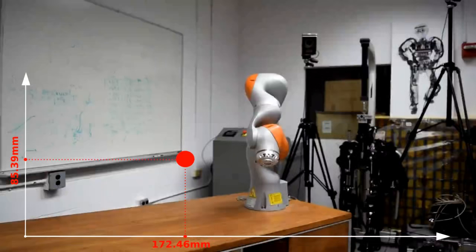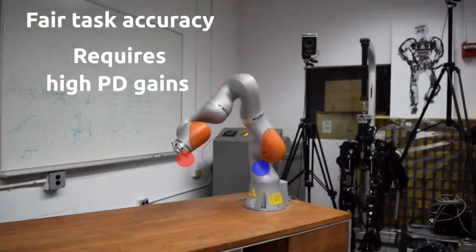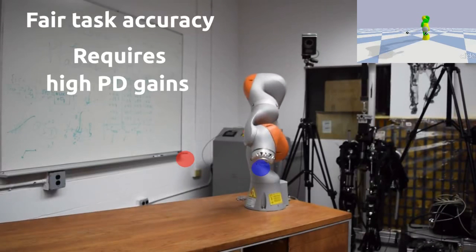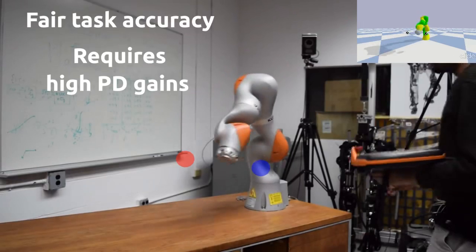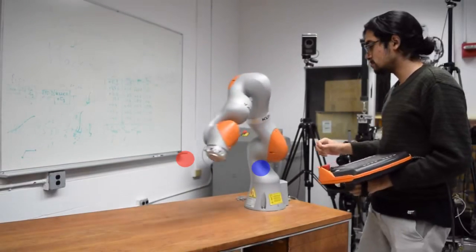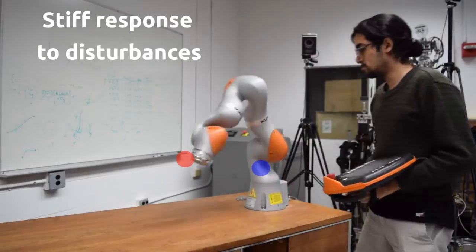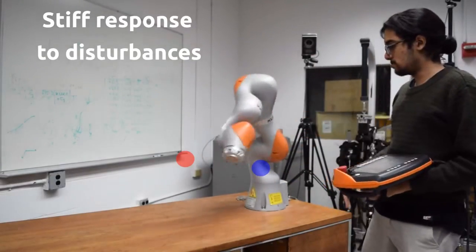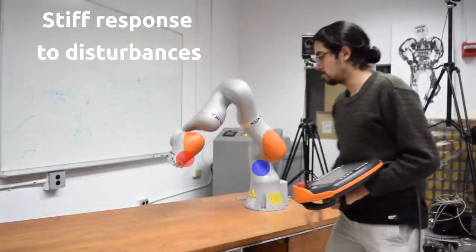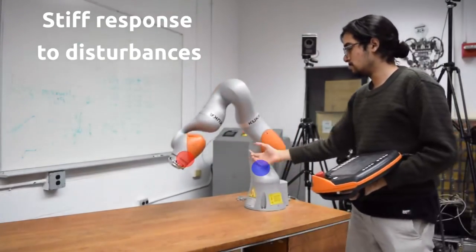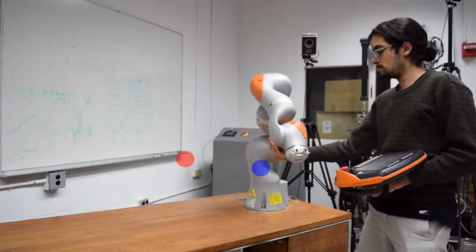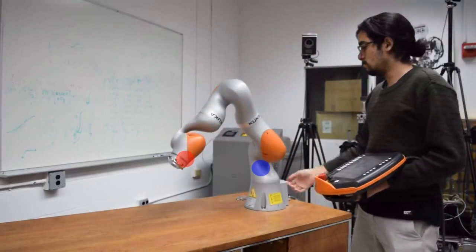Open-loop MPC can achieve a fair task accuracy if the PD controller has very high gains. We are forced to trade off compliance against accuracy. Stiff gains can lead to dangerous robot reaction as we just saw here.